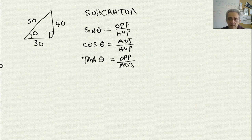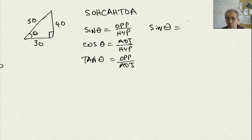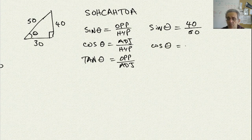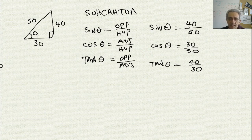Most math teachers will teach this as SOH-CAH-TOA, where sine theta equals opposite over hypotenuse, cosine theta equals adjacent over hypotenuse, and tan theta equals opposite over adjacent. So sine theta equals 40 divided by 50, cosine theta equals 30 divided by 50, and tan theta equals 40 divided by 30. The 30 is adjacent to theta, 40 is opposite, and 50 is the hypotenuse.